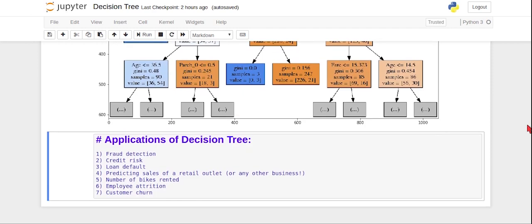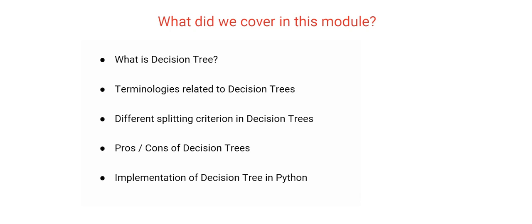There are tons of applications of decision trees — fraud detection, credit risk, loan default, employee attrition, customer churn, and regression problems like predicting retail sales or the number of bikes rented. In this module we learned what a decision tree is, pure and impure nodes, terminologies like root node, leaf node, and branches. We discussed how to select the best split point using algorithms like Gini impurity, chi-square, reduction in variance, and information gain. We then saw how to optimize performance and implemented the decision tree algorithm in Python, including how to plot a decision tree.